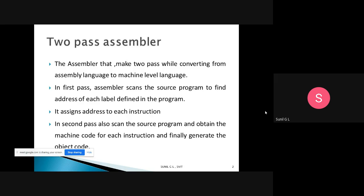In Pass 1, the assembler scans the whole source program and finds the address of each label defined in the program. These addresses are stored in a symbol table, assigning an address to each instruction. In Pass 2, we scan the whole source program to obtain the machine code for each instruction and finally generate the actual object code.